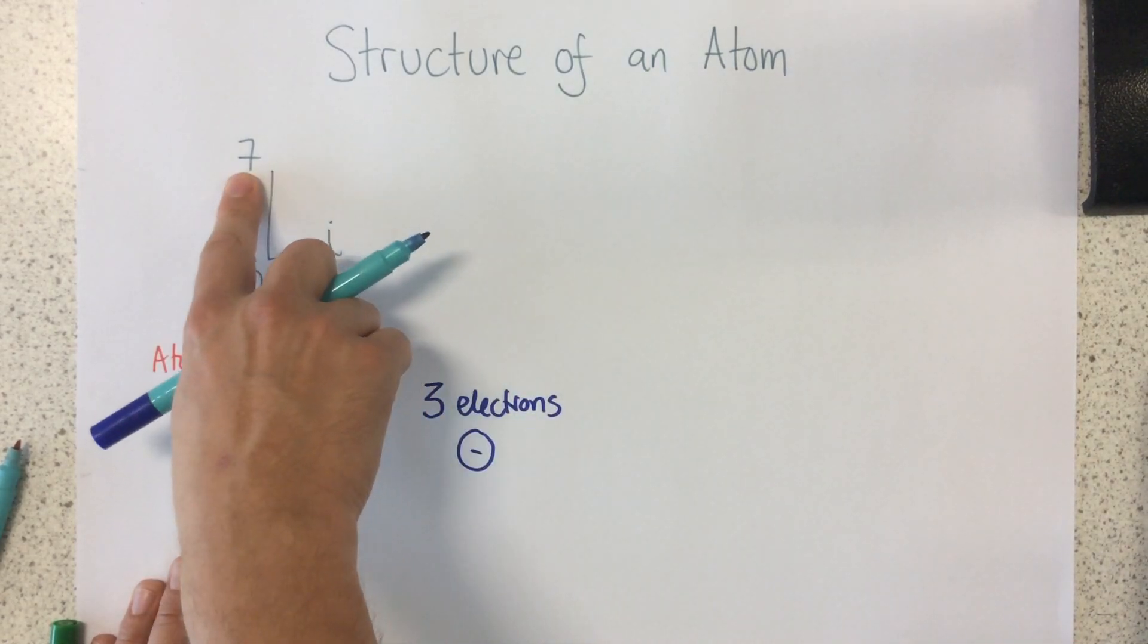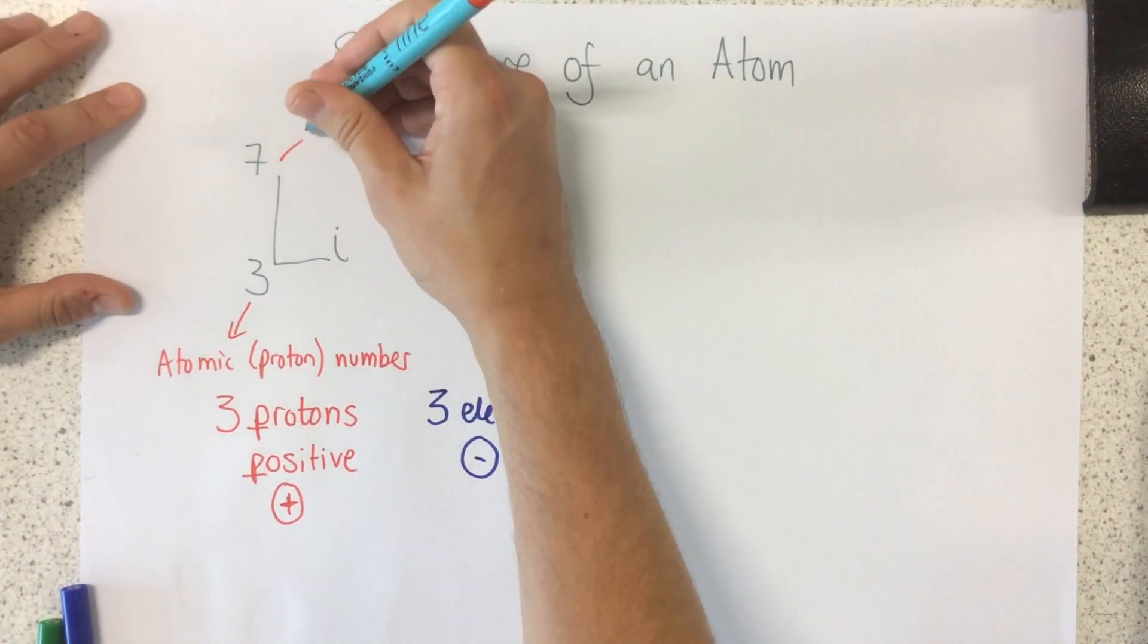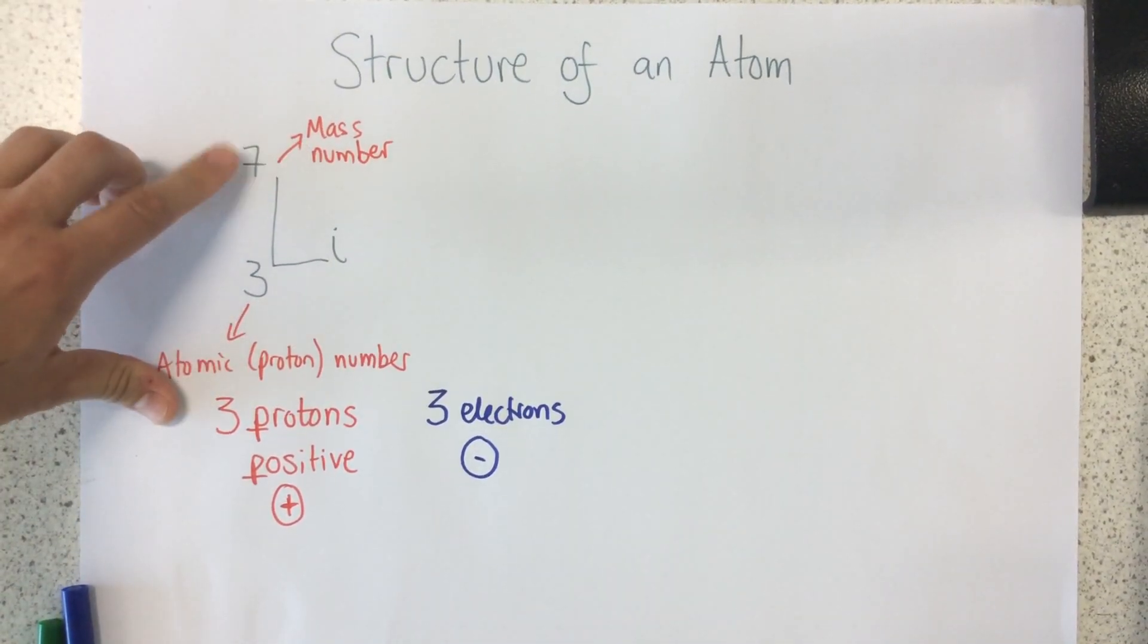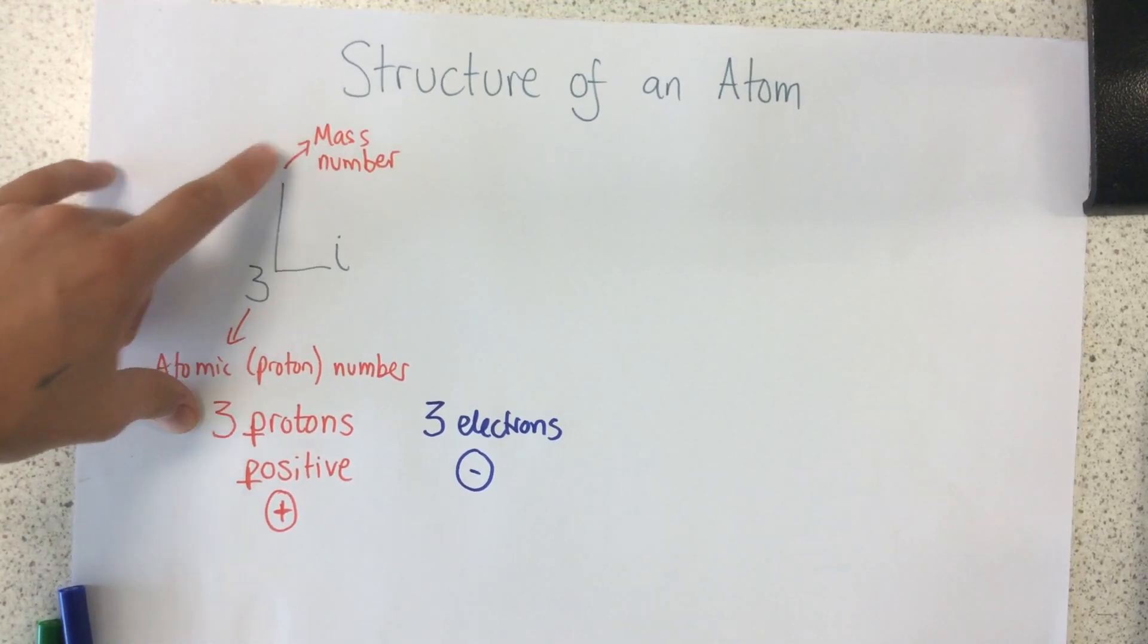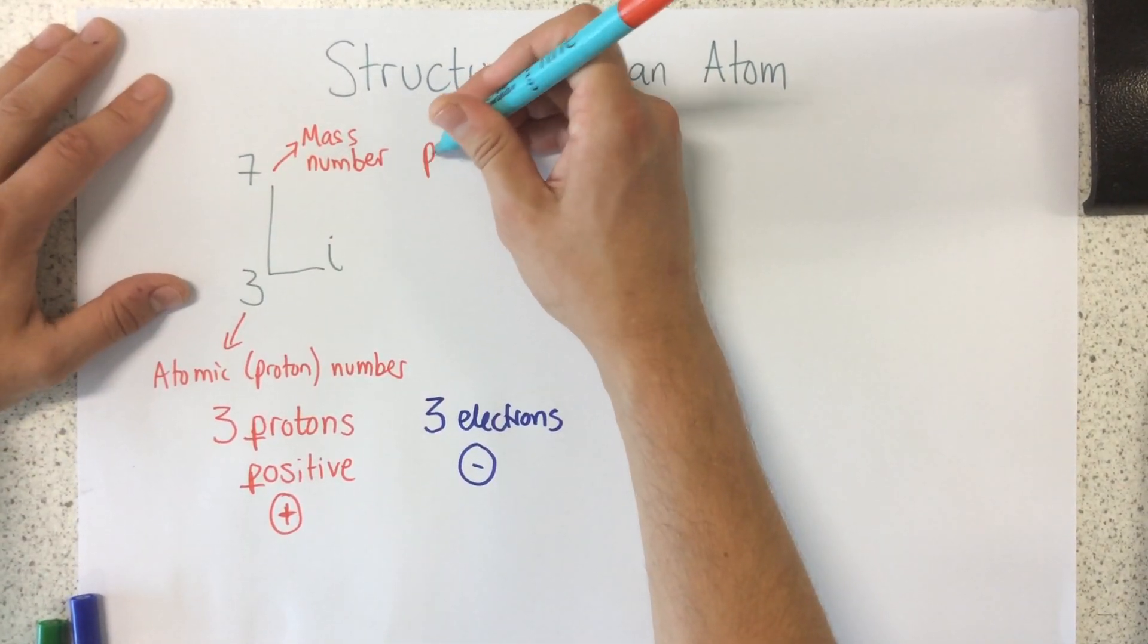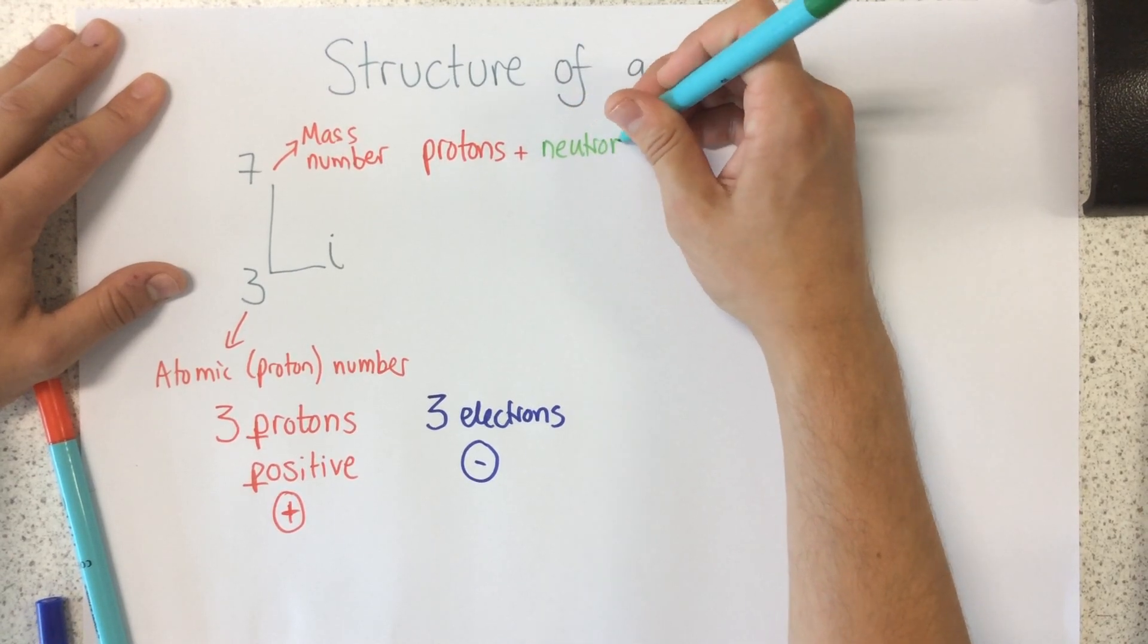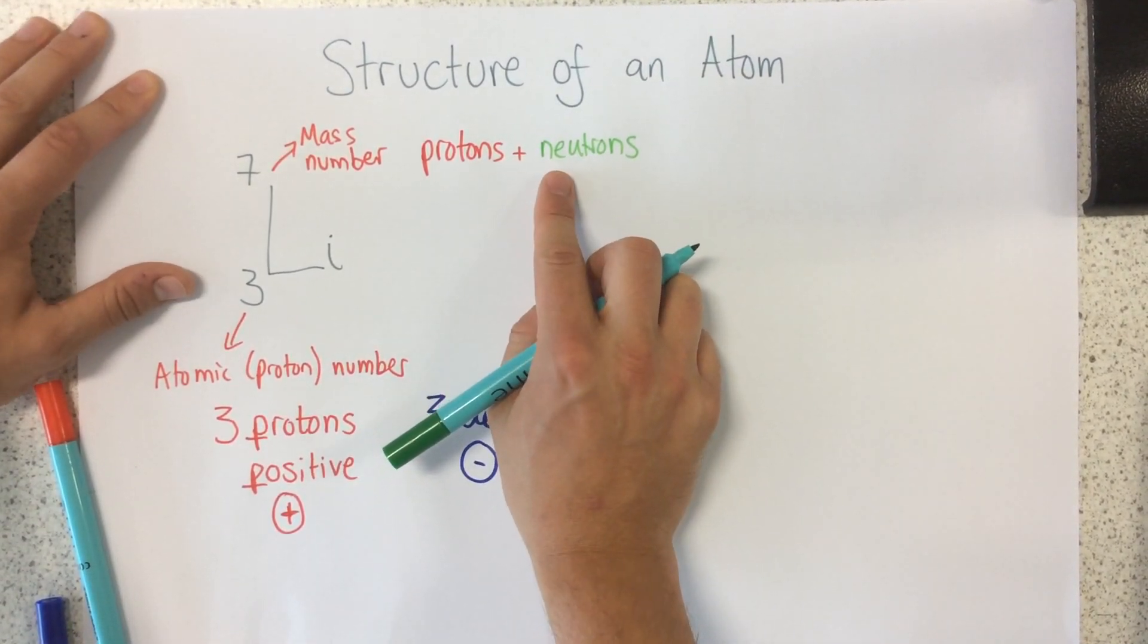OK, moving on to the mass number. So this here is called the mass number. Now, the way I remember that this is called the mass number is this number is bigger than the atomic number. So I think of mass, I think of massive. I know that this number is bigger. The mass number tells us the number of protons plus our number of neutrons. These are the 2 particles that we find in the nucleus of an atom.